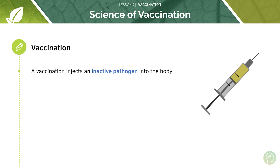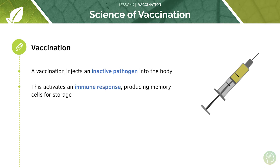In a vaccination we inject an inactivated form of the pathogen. This might be a heat-treated component of the pathogen — the heat makes it inactive but the antigen is still recognised by the immune system — or perhaps a dead form of the pathogen. Crucially, this inactive pathogen activates an immune response, generating antibodies and producing memory cells which remain circulating in the blood.